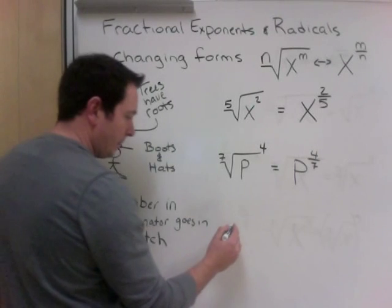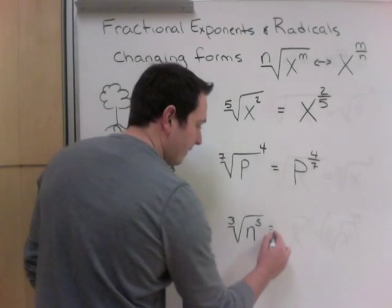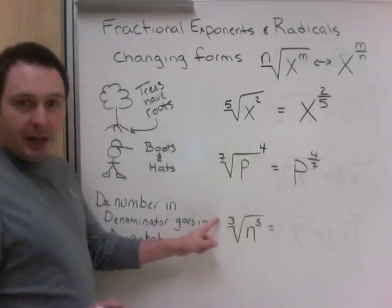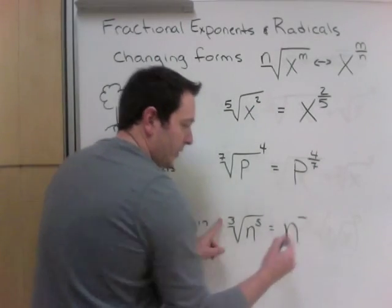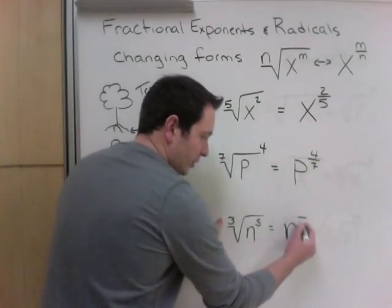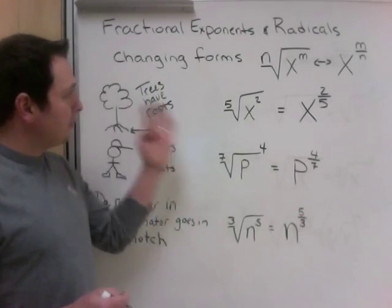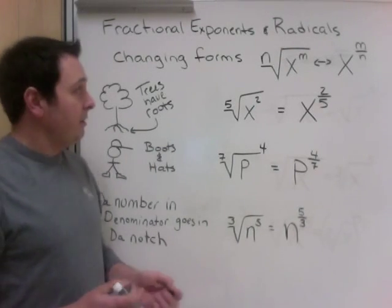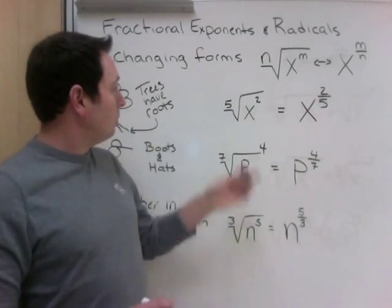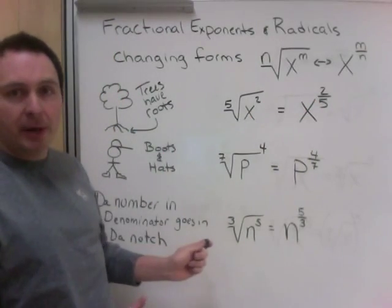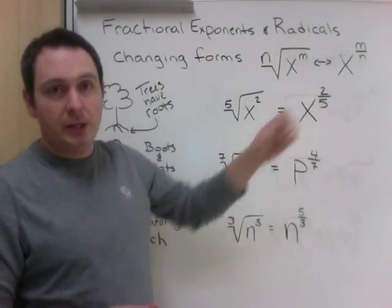For the denominator-in-notch method: the cube root of n to the power of 5. The number in the notch is the denominator — the bottom of a fraction — so the cube root gives us 3 on the bottom, and 5 on top: n to the power of 5 thirds. You can pick any method you like, or just memorize the formula directly. As long as you can go from one form to the other.